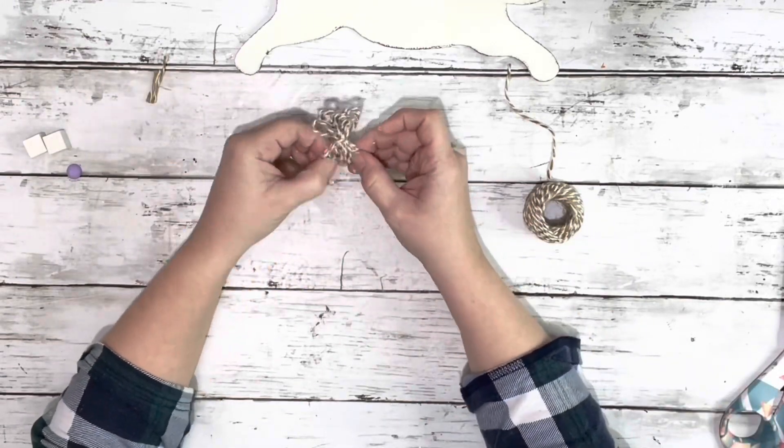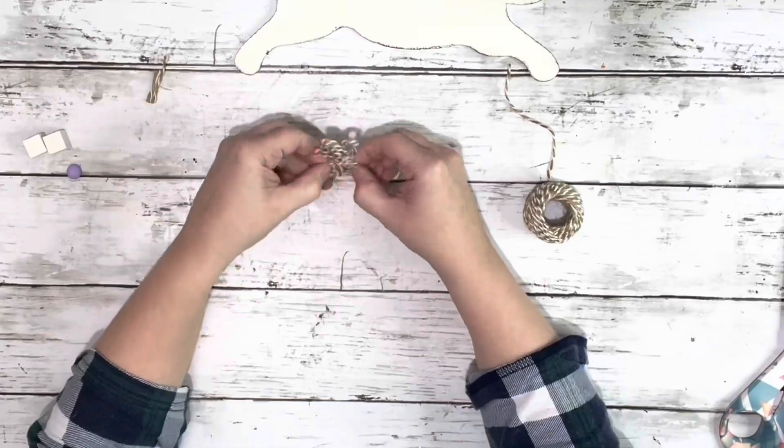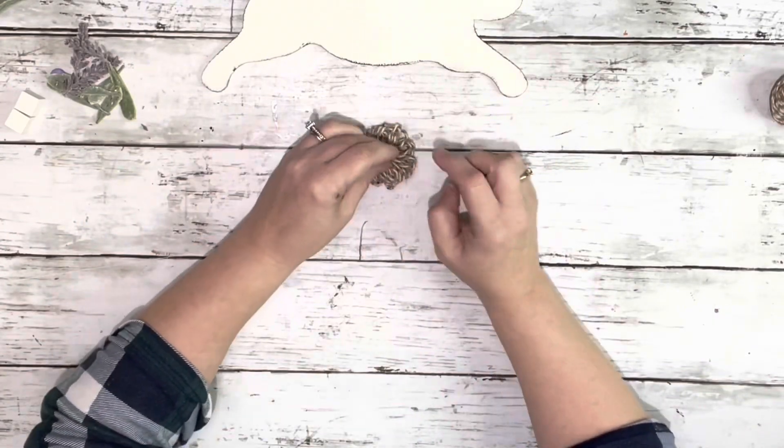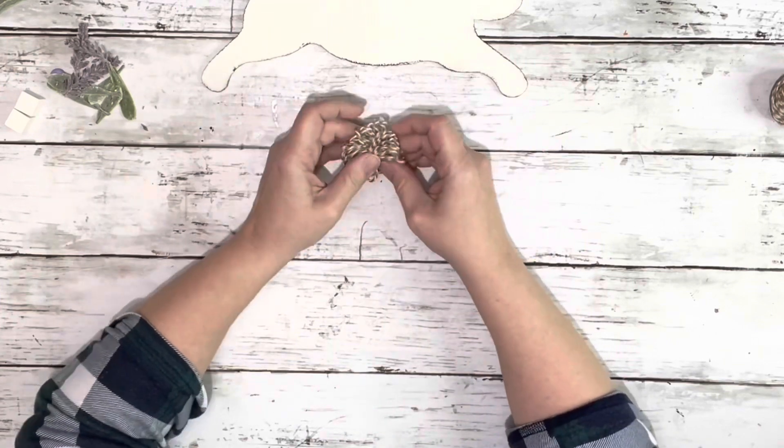Once you have them made, just fan out the little pieces of twine to separate them. Then take one and hot glue it across the other one to make a little flower.